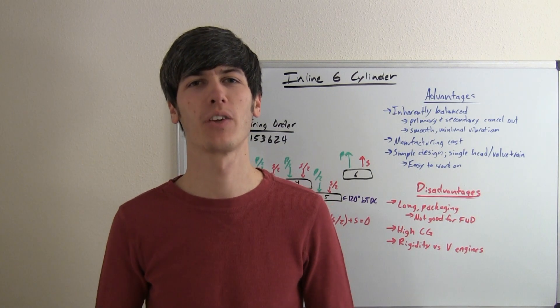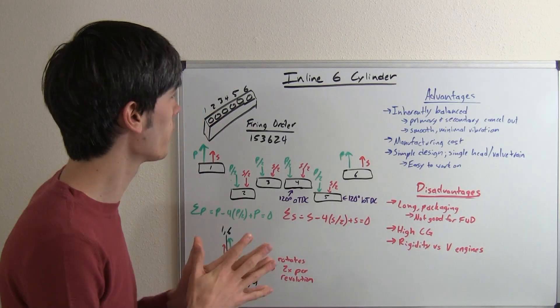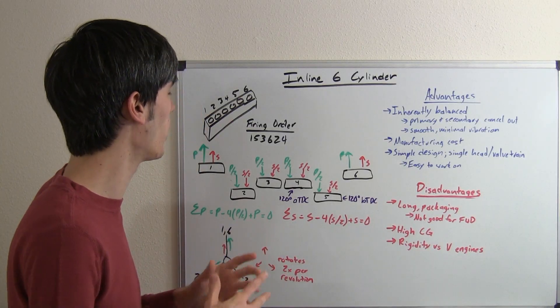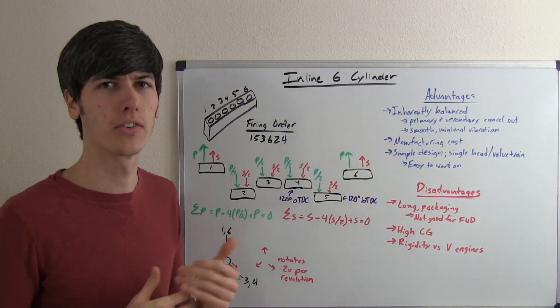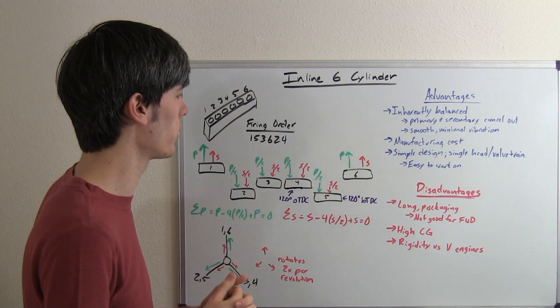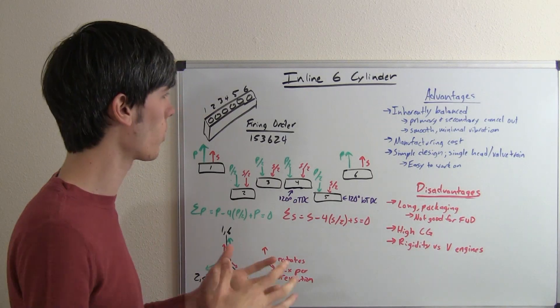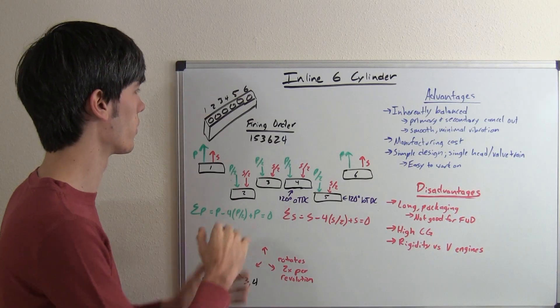Hello everyone and welcome. In this video, I'm going to be explaining inline six-cylinder engines. Inline six-cylinder engines are pretty popular, and we're going to go into the reasons as to why that is. Some of the famous engines out there like the 2JZ in the Toyota Supra, as well as BMW uses inline sixes in quite a bit of their product range. So why would you use an inline six cylinder?